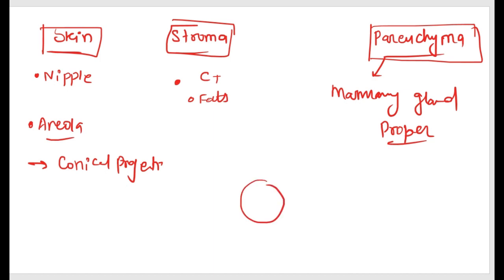The longitudinal smooth muscles flatten the nipple, while the circular muscles provide nipple stiffness. The nipple has a rich blood supply and is the most sensitive part of the breast. During sexual arousal, it may become erect.